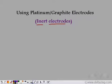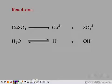So now we have copper sulphate. It dissociates to give the copper ions and the sulphate ions, and water dissociates to give H⁺ and OH⁻. So there are two cations and two anions in the solution.